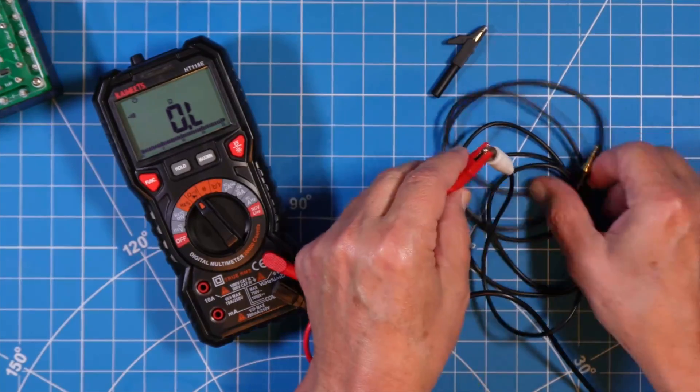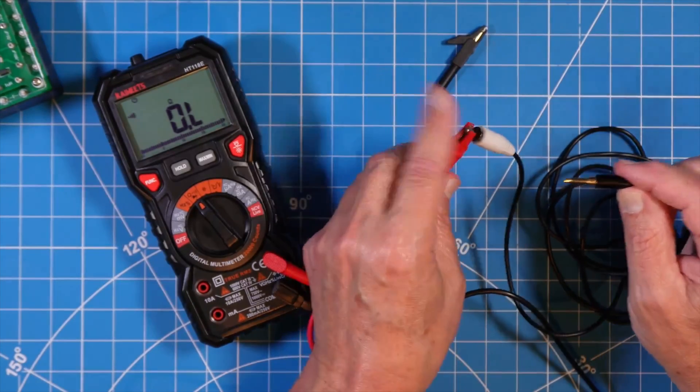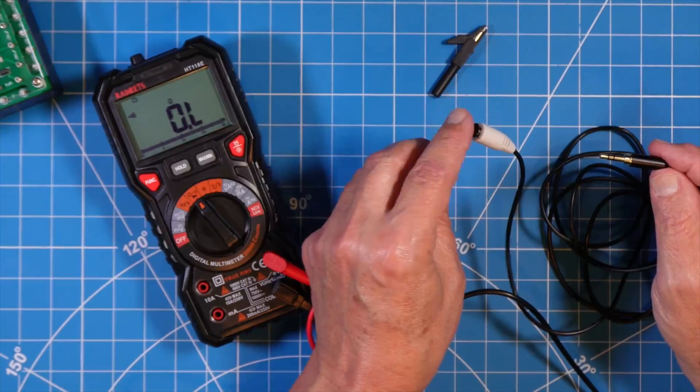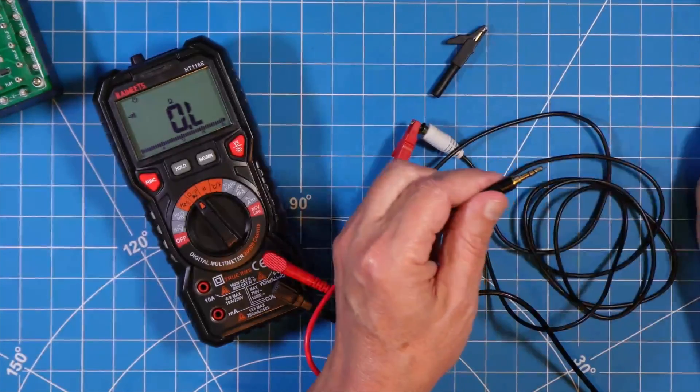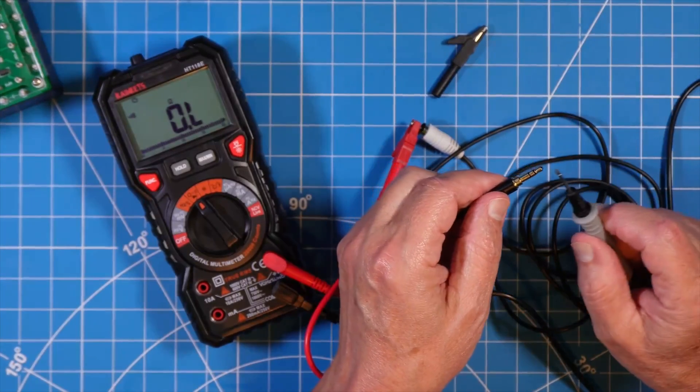And you need to know on this TRS plug, which corresponds to the plug on the RCA connector. So is it the TRS? Is it the tip, the ring, the sleeve?